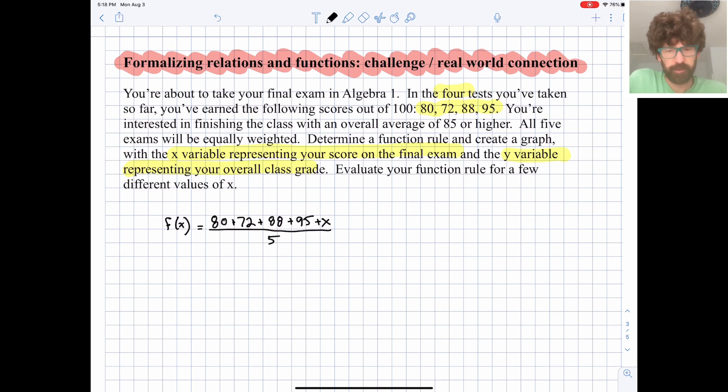I'm going to do a little bit of simplifying here, and let's sum those numbers up that we have. So I get f of x is equal to 335 plus x all over five. And we can simplify that a little bit more. I'm going to rearrange things and separate it out into two different pieces.